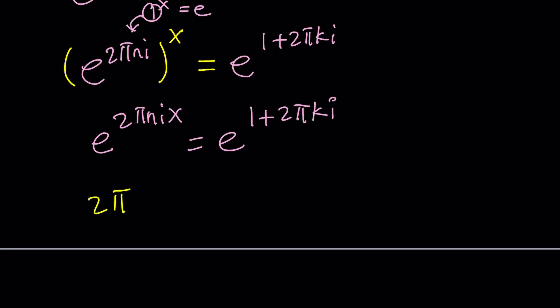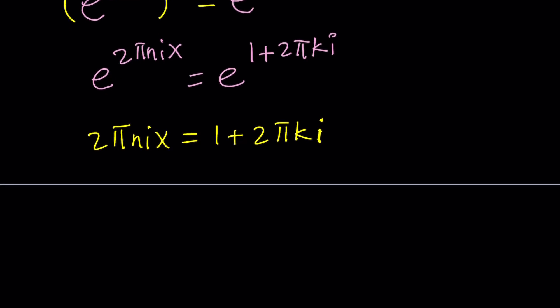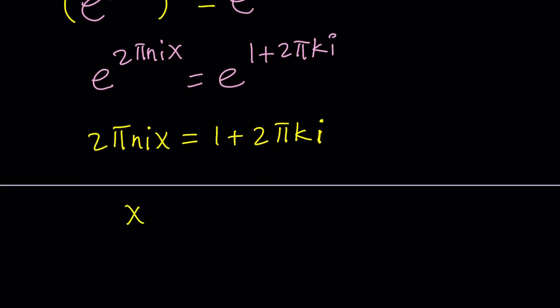From here, we get 2 pi n i x equals 1 plus 2 pi k i. Since the bases are the same, we can do the natural log. We already added the 2 pi k on one side, so we're good in terms of all the multiple values. Since we're solving for x, we should divide everything by the coefficient of x, which is 2 pi n i. So it's going to be 1 over 2 pi n i plus 2 pi k i divided by 2 pi n i.